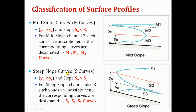Coming to steep slope curves, called S curves. These are water surface profiles occurring in steep slope channels where the normal depth is less than the critical depth and S0 is greater than SC. For steep slope channels, three types of curves are possible. If the depth of flow is greater than both the critical depth and normal depth, it is zone 1, giving S1 curve. If the depth of flow is between critical depth and normal depth, it is zone 2, giving S2 curve. If the depth of flow is less than both, it is zone 3, giving S3 curve.